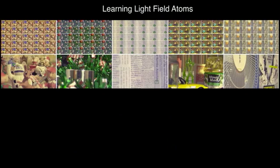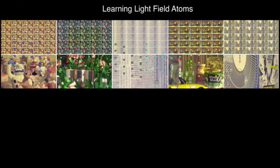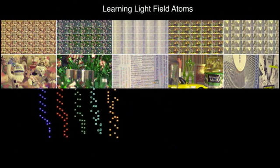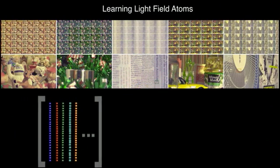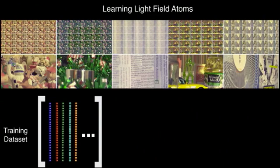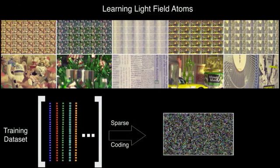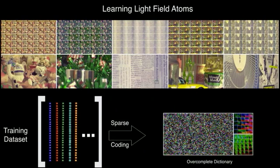We propose to learn light field atoms from light field training sets. For this purpose, a large number of small 4D patches is extracted from the training set. Sparse coding techniques are employed to learn an over-complete dictionary that contains the essential building blocks or atoms of the training light fields. These atoms capture high-dimensional edges as well as high-frequency structures exhibiting different amounts of rotation and shear.